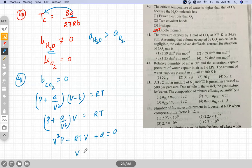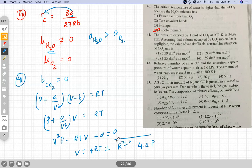So when you solve this, you'll get V equals to minus B, that is RT, plus minus B square minus 4AC, so 4 into A into P root over of it, divided by 2A, that is 2P.